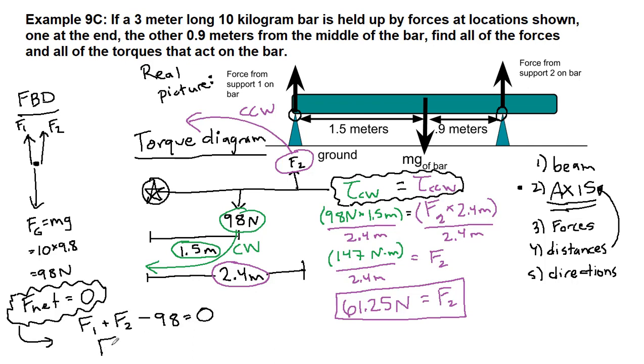And so to get the second force that we haven't yet gotten, which is technically the force from support 1 on the bar, we will add 98 to both sides and subtract F2, which in this case, we're going to plug it in, 61.25.